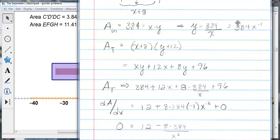But this is 384 times x to the negative 1. So when you take the derivative, you get negative 384 times x to the negative 2. So that's where this negative came from. And then x to the negative 2 becomes x squared. And then the final term here is 96, which has a derivative of 0 as well.